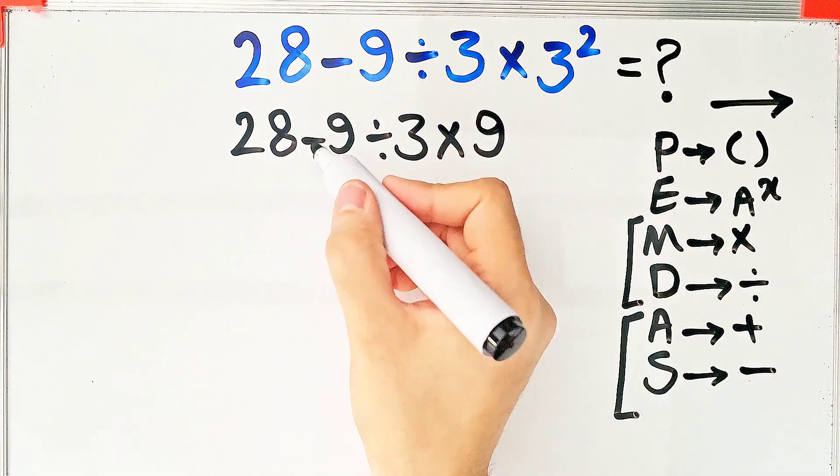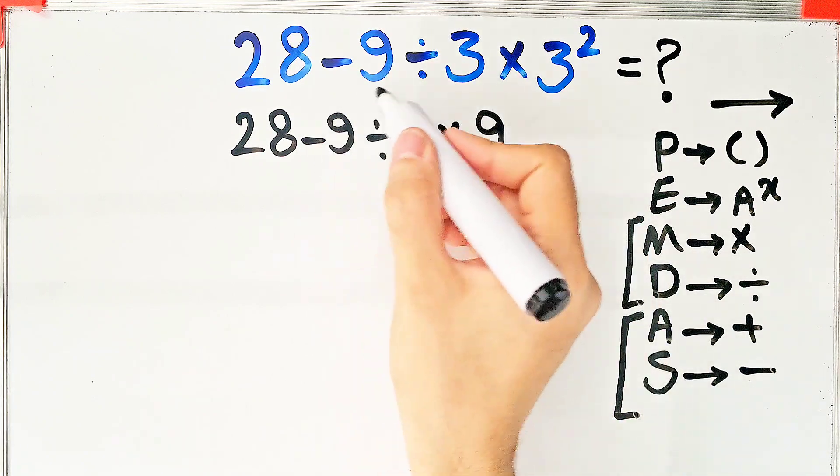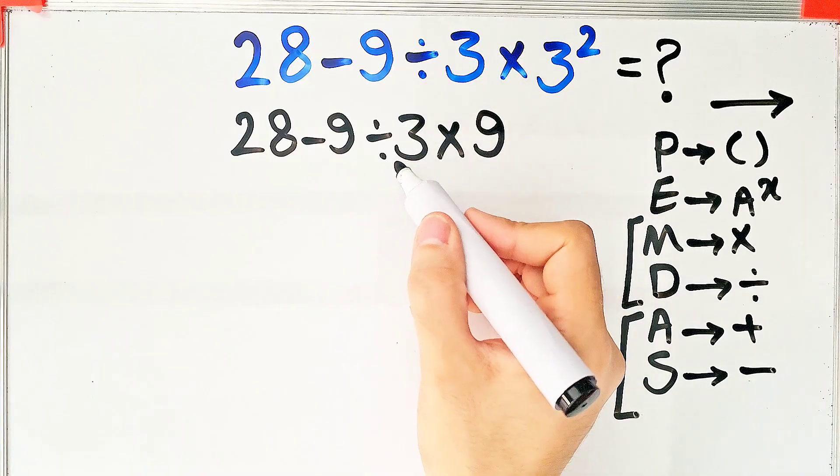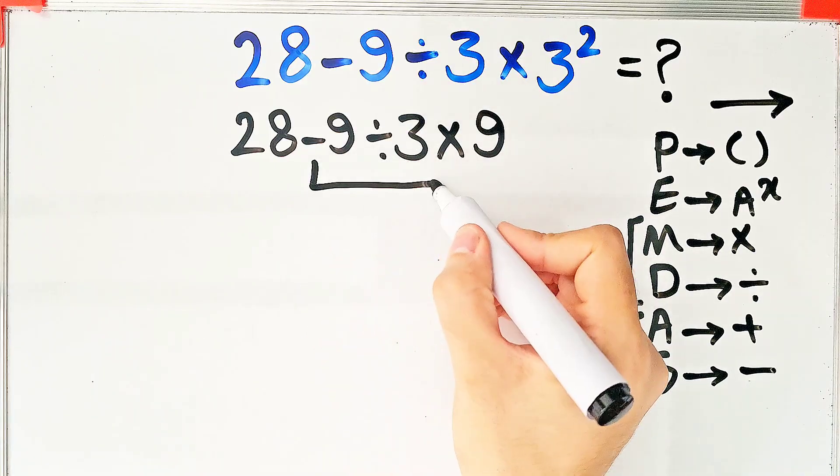Now we have subtraction, division and multiplication. First we do this division. Negative 9 divided by 3 equals negative 3.